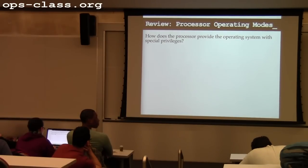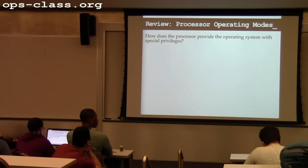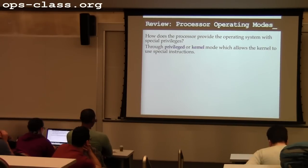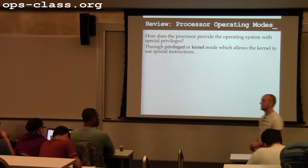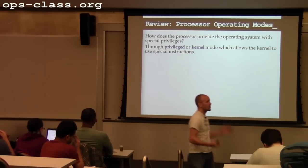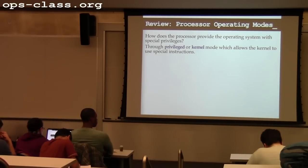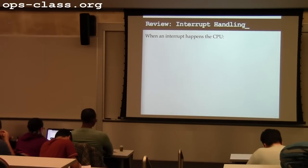What processor feature exists to help the operating system divide resources and give it special power? We have something called privileged or kernel mode, which gives the kernel access to special instructions and allows it to modify registers you can't modify when running in other modes. This is built into the hardware itself. When a hardware device needs some help from the kernel, the CPU enters privileged mode.